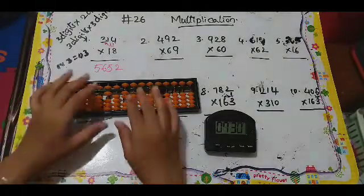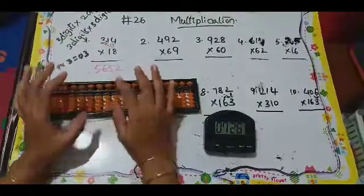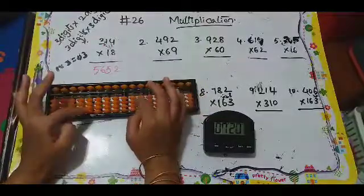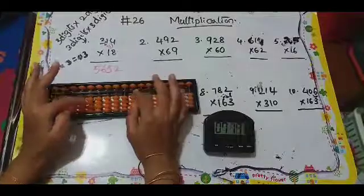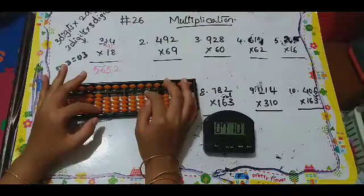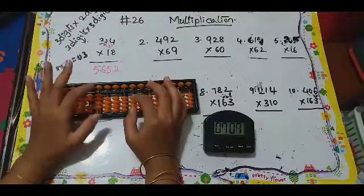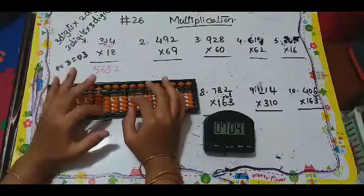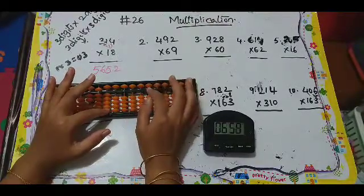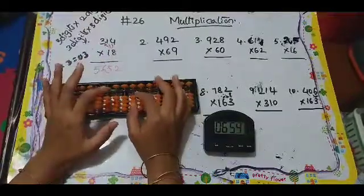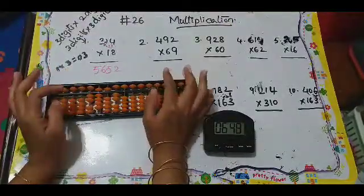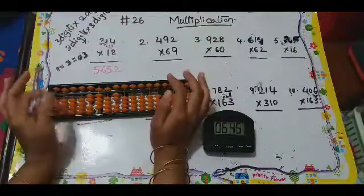The next one: 492 times 69. First we have to do six with 492. Again we need five columns. Six fours are 24, then six nines are 54 — so I must add five here. Next, six twos are twelve: one two. Done. Next I will go for nine with 492. For six I have to leave one column.